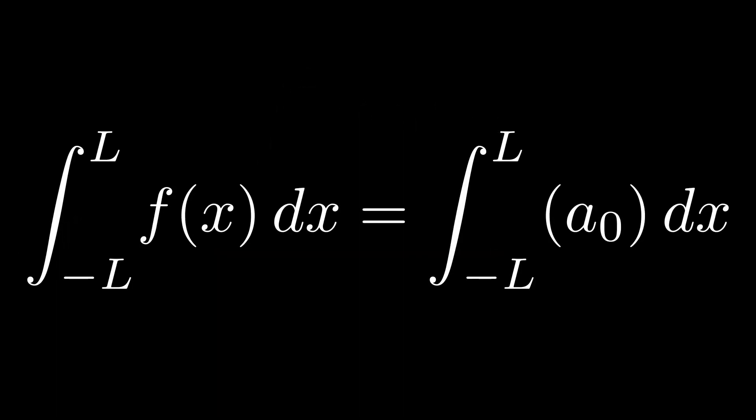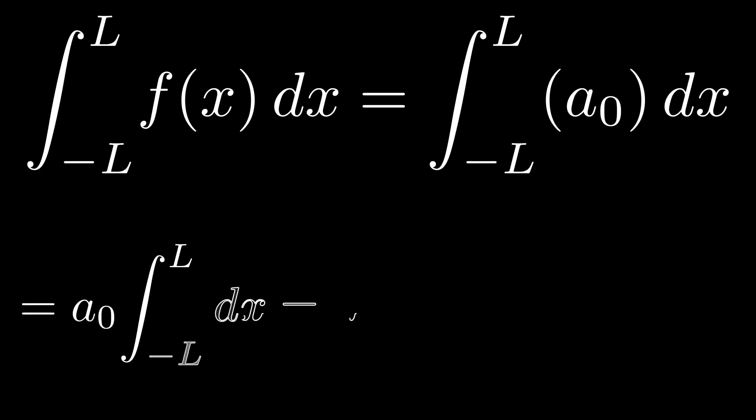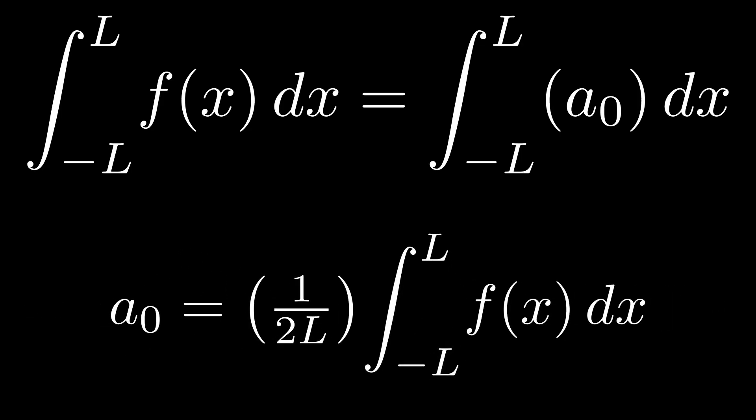This leaves us with the following. The integral of f of x with respect to x from negative l to l is equal to the integral from negative l to l of the constant term of our Fourier series with respect to x. Simply evaluating the integral and solving for a sub 0, we find that the constant term in the Fourier series is equal to 1 over 2l times the integral of f of x dx from negative l to l.